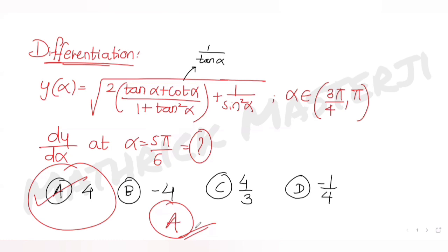I hope you understood how to solve this type of question involving differentiation. We first simplified the function as much as possible, understood the sign behavior over the given range of α, found the derivative, and evaluated at α = 5π/6, giving the answer 4, which is option A.